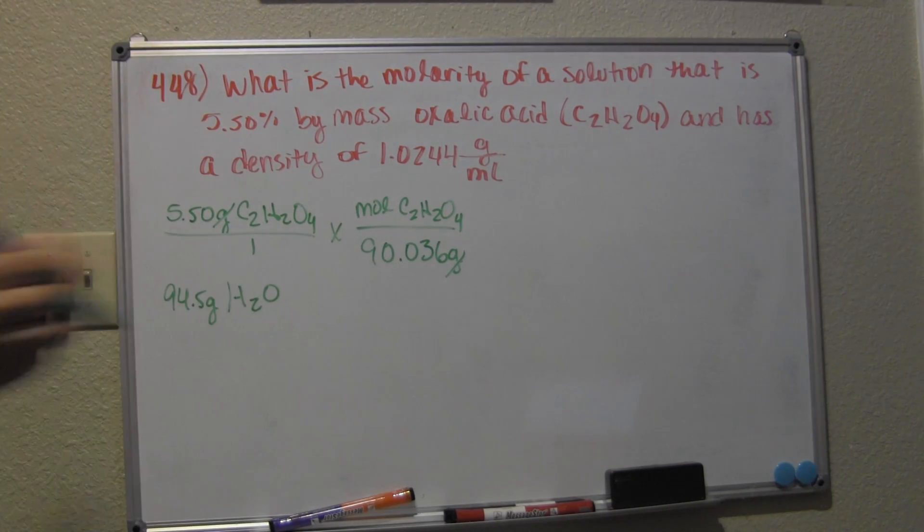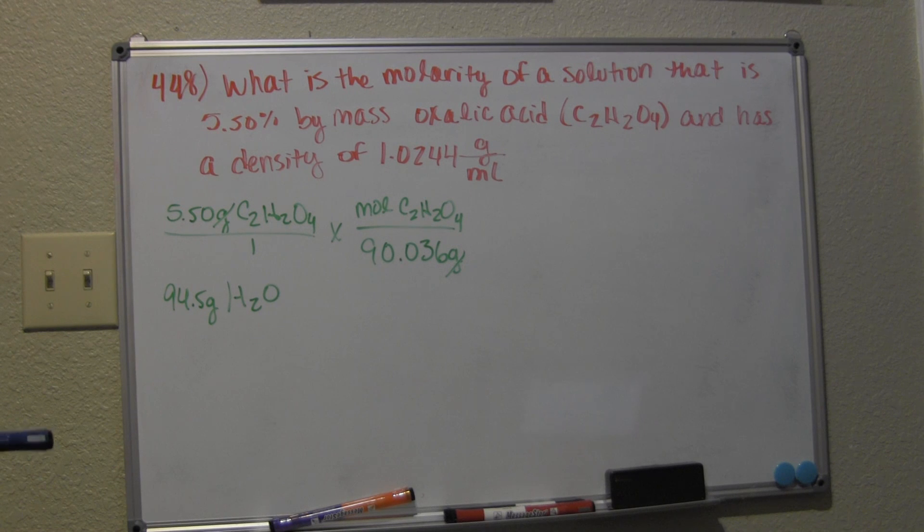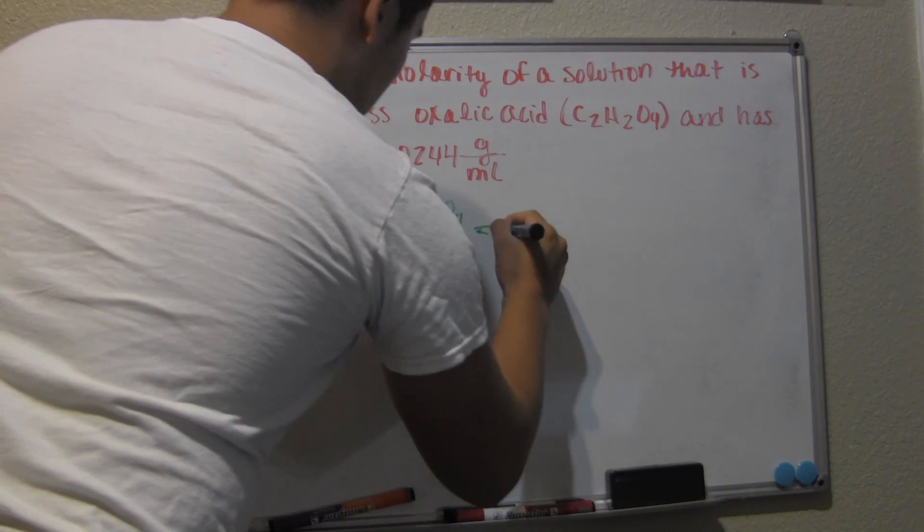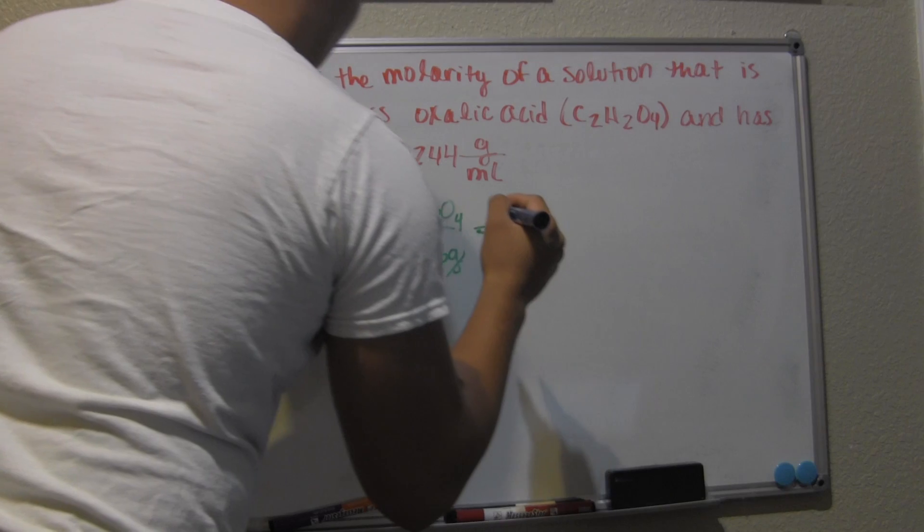Our grams will cancel out and leave us with moles. So let's divide 5.5 divided by 90.036, and you should get 0.0611 moles of C₂H₂O₄.